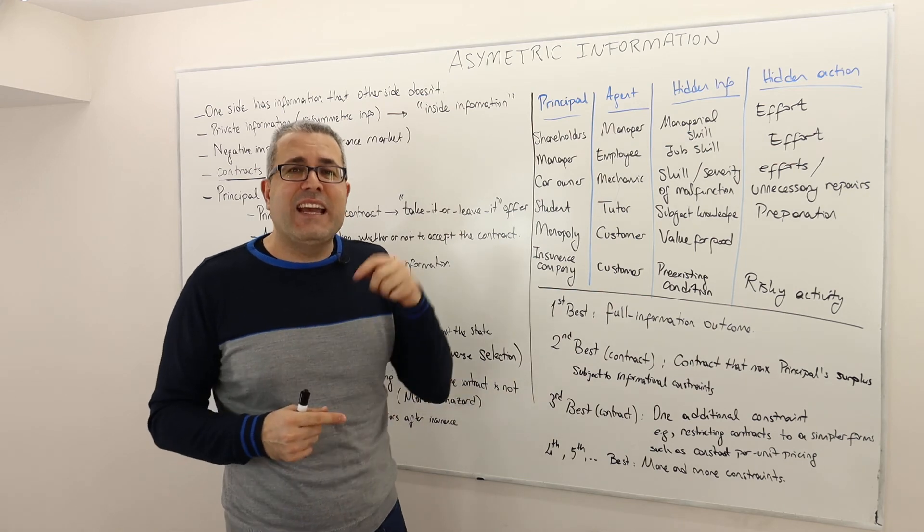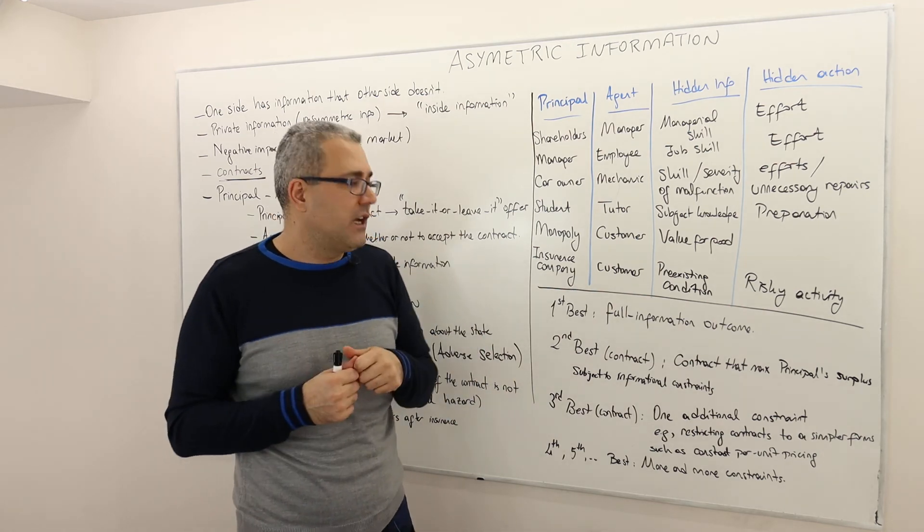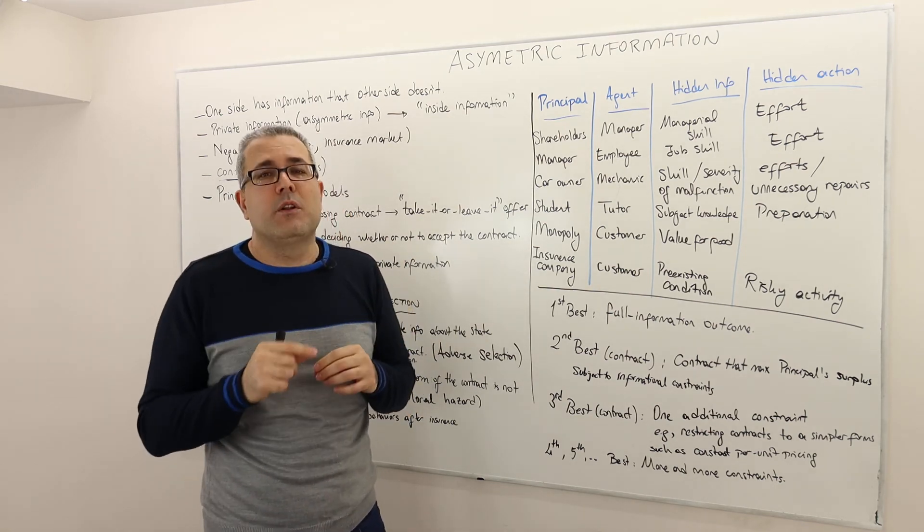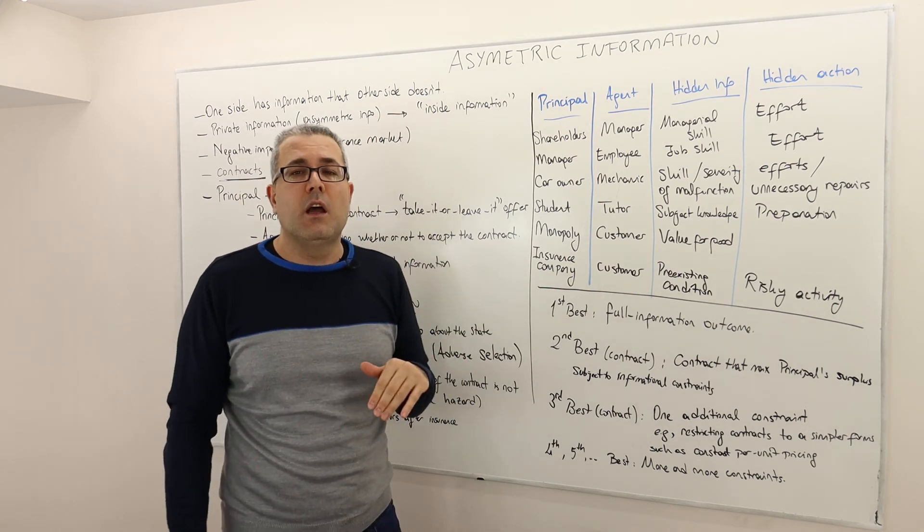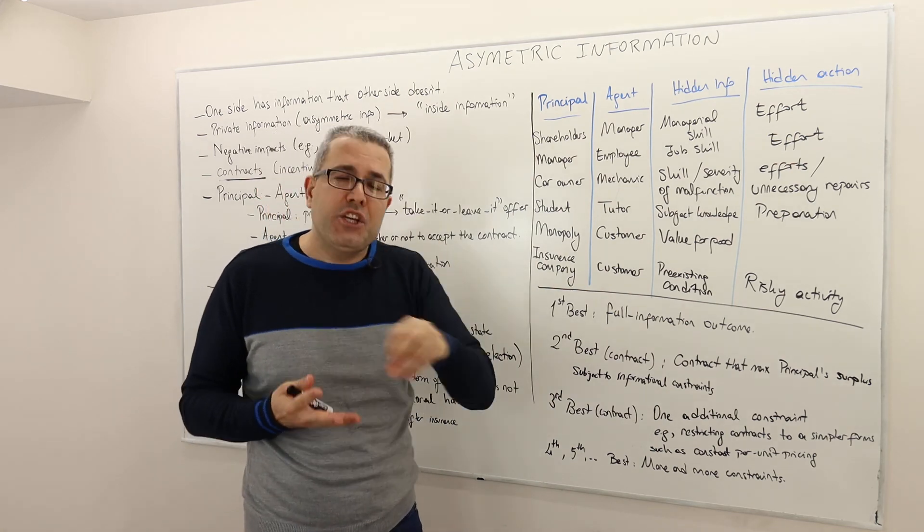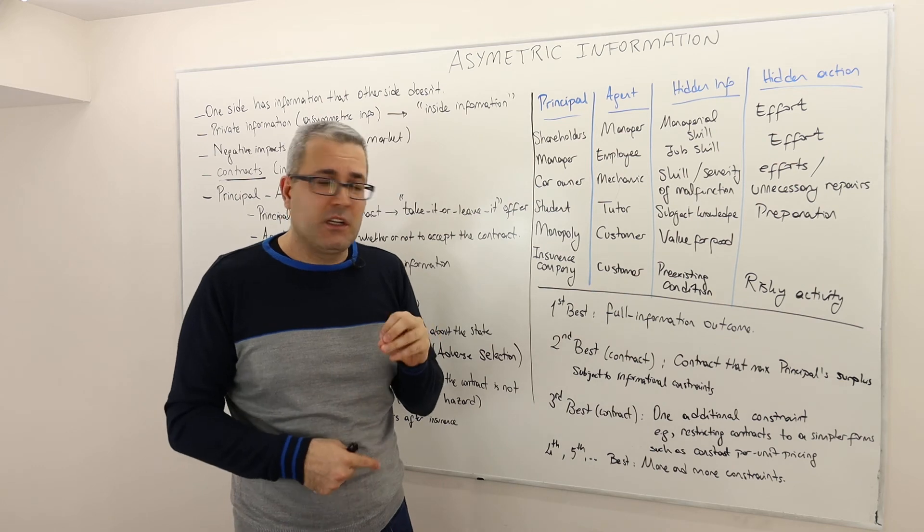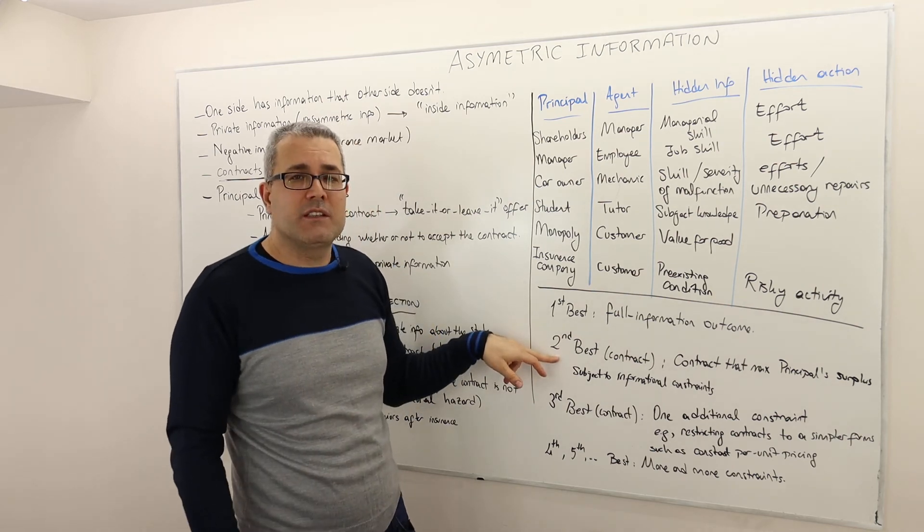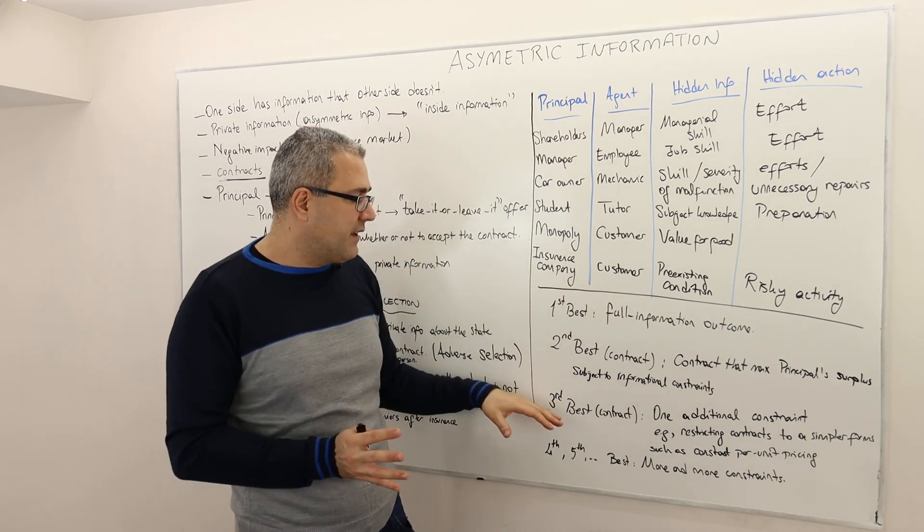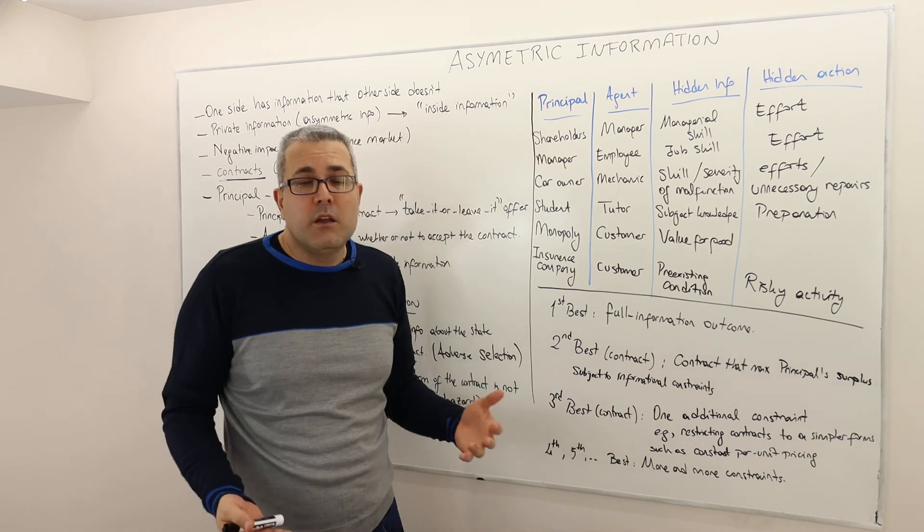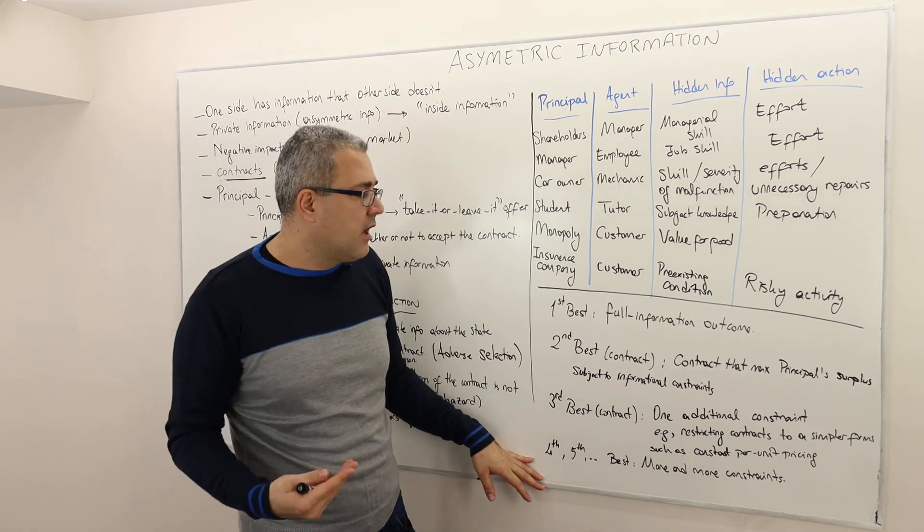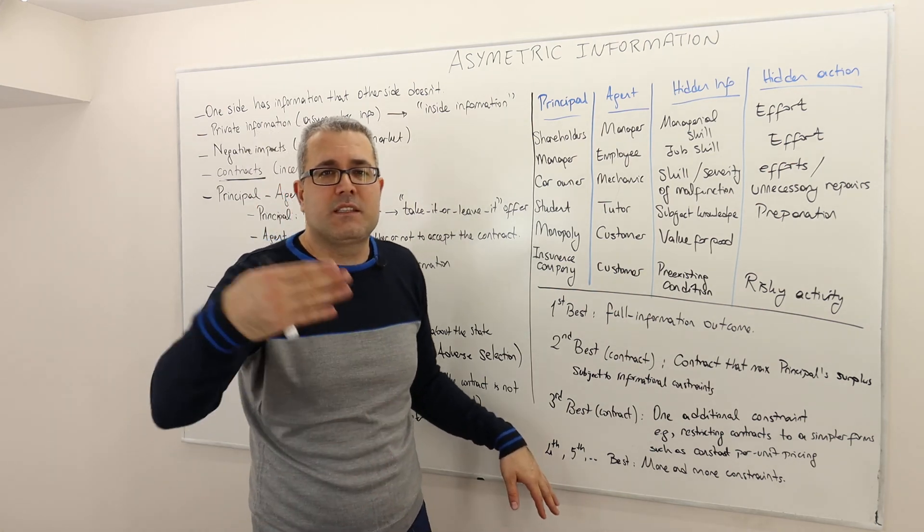Well the thing is, you may actually add additional constraints. Like for example, the contract has to be simple in the sense that you have to charge a fixed price per output you sell. So if you have additional constraints other than the informational constraint that I just mentioned in the second best, well we call those the solution of the optimization problem as the third best contract. Well you don't have to stop there. You may add additional constraints. But the more constraints you add, well it becomes the fourth best, fifth best, et cetera.